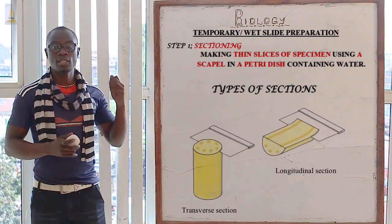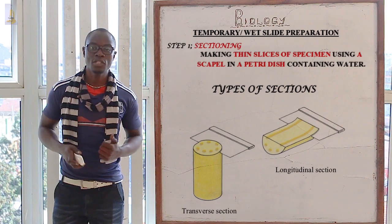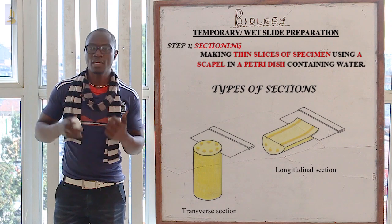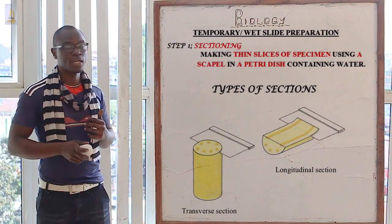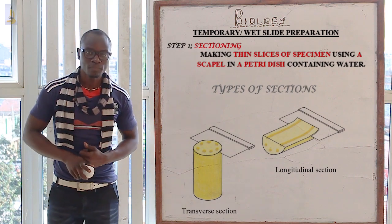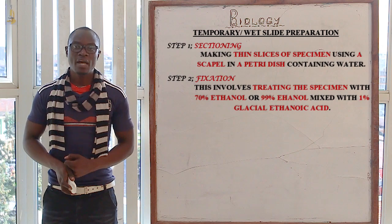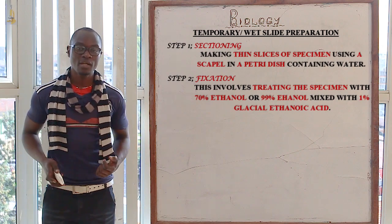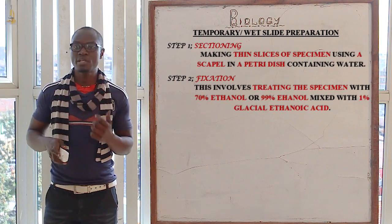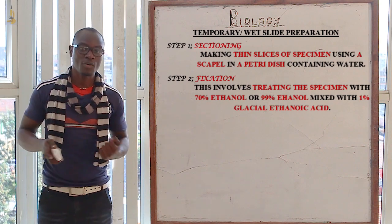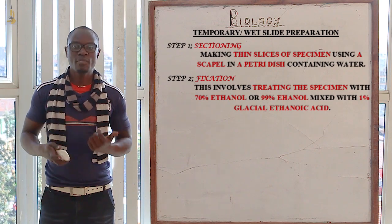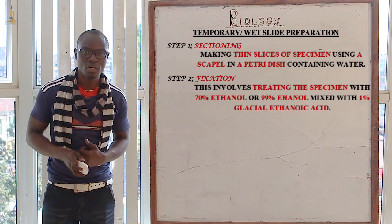The longitudinal section — just from the word 'longitude,' from top to bottom — is obtained by cutting along the specimen from top to bottom. The next step is called fixation, whereby this involves treating the specimen with 70% ethanol or 99% ethanoic acid mixed with 1% of glacial ethanoic acid. These chemicals are called fixatives — a fixative is a chemical which is used in the fixation process.